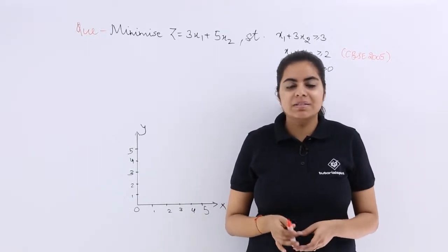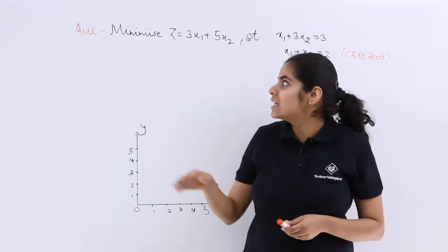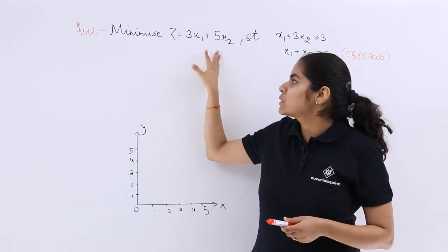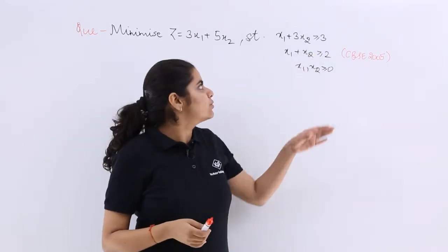Let's see the question asked in the CBSE examination 2005. It says, minimize z equals 3x1 plus 5x2 subject to these constraints.